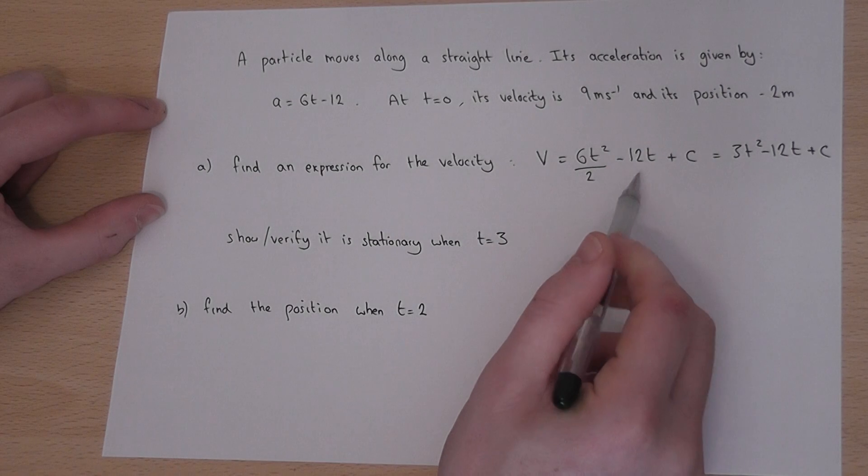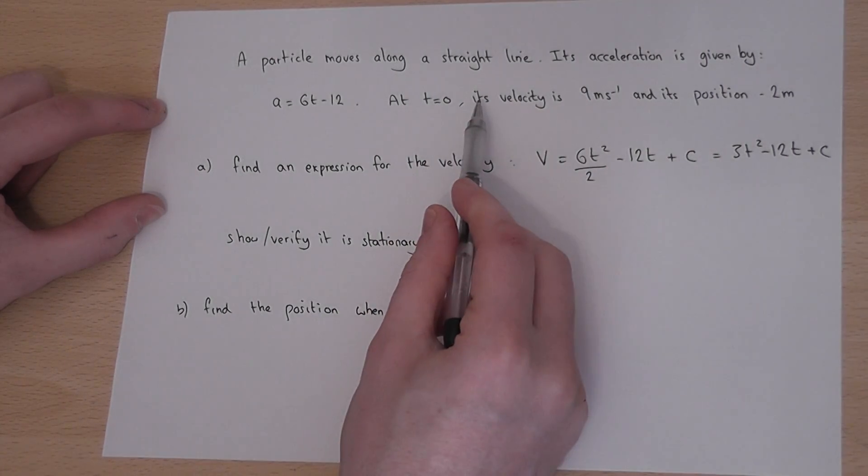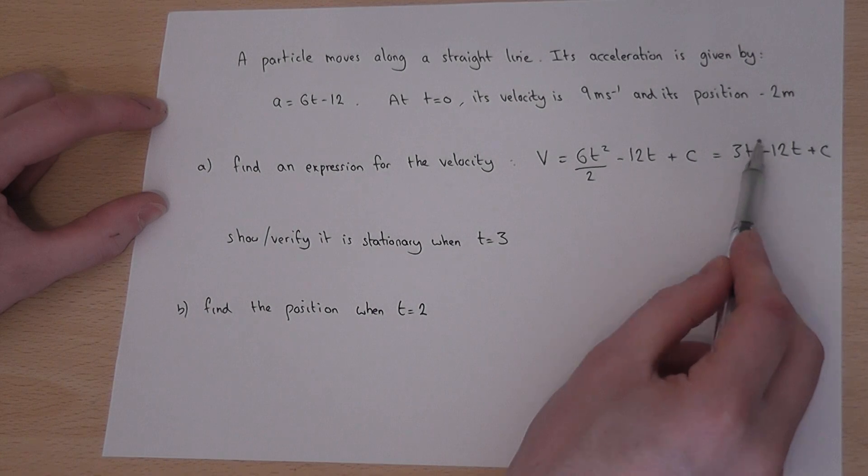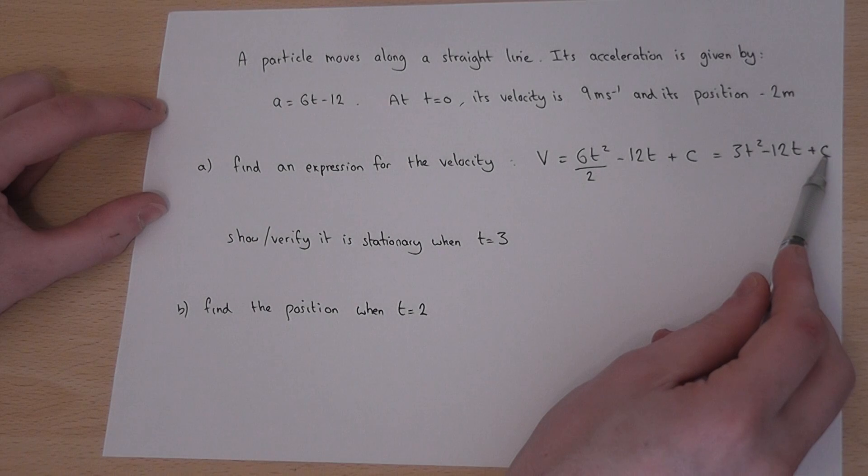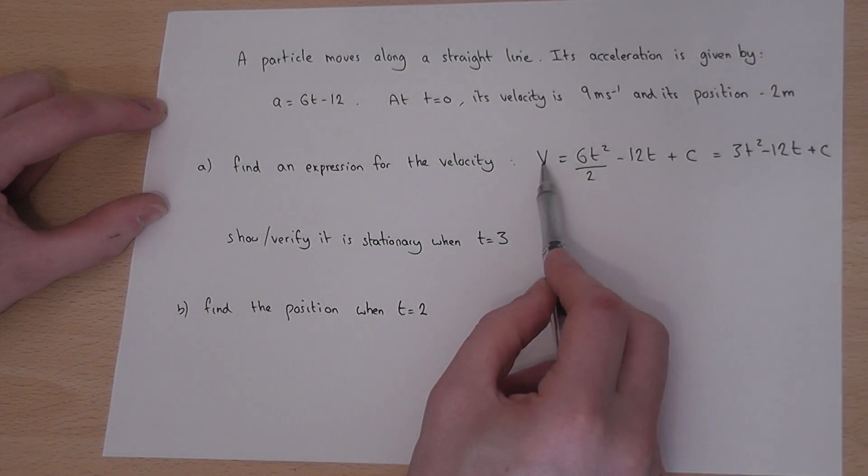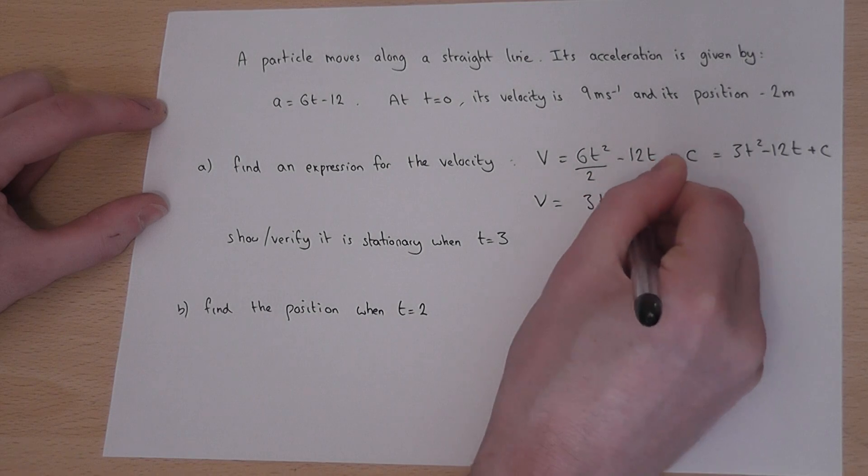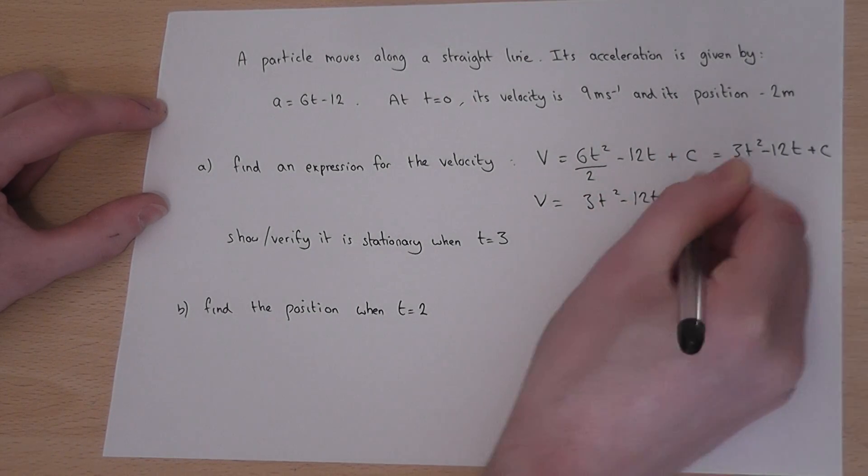We're told that when t is 0 the velocity is 9. So when t is 0 these two terms cancel off, so c must equal 9 to make the velocity 9 when t is 0. So v equals 3t squared take away 12t plus 9.